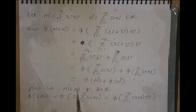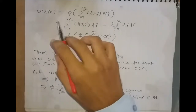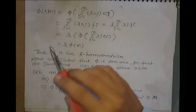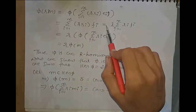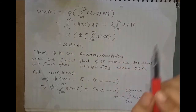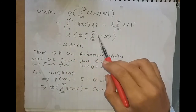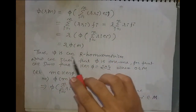Now consider an element M' in M and an element R in ring R. Then φ(R·M') = φ(R·Σ Ri·Ei) = φ(Σ R·Ri·Ei) = Σ R·Ri·Fi = R·Σ Ri·Fi = R·φ(M'). So φ(R·M) = R·φ(M), and therefore φ is an R-homomorphism.